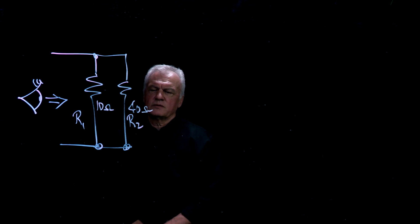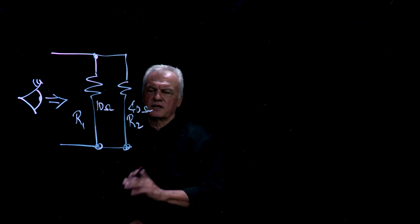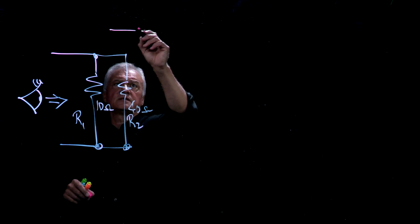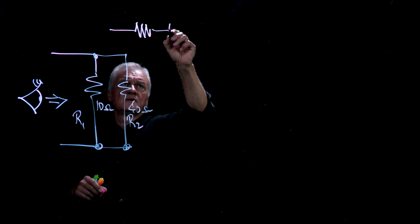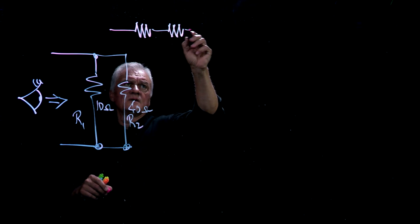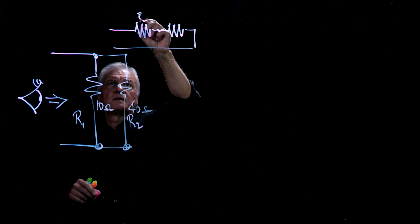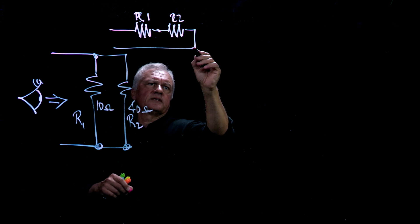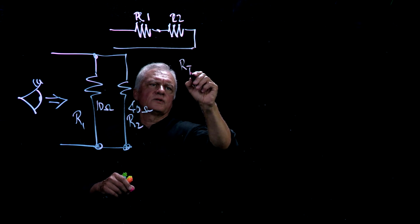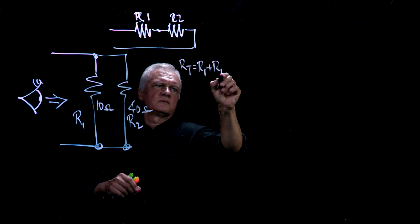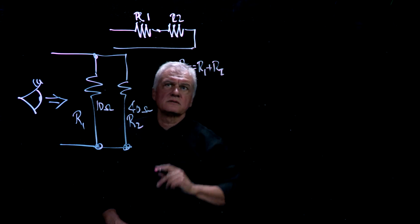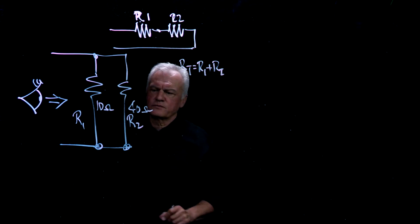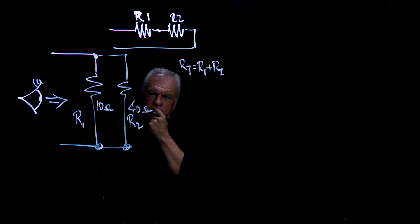Well, in spite of Ohm's law V equals IR, here what we need to do is realize that resistors in parallel are different than resistors in series. In series, our total is R1 plus R2. In parallel, we have to use a different formula. So let's look at that again.